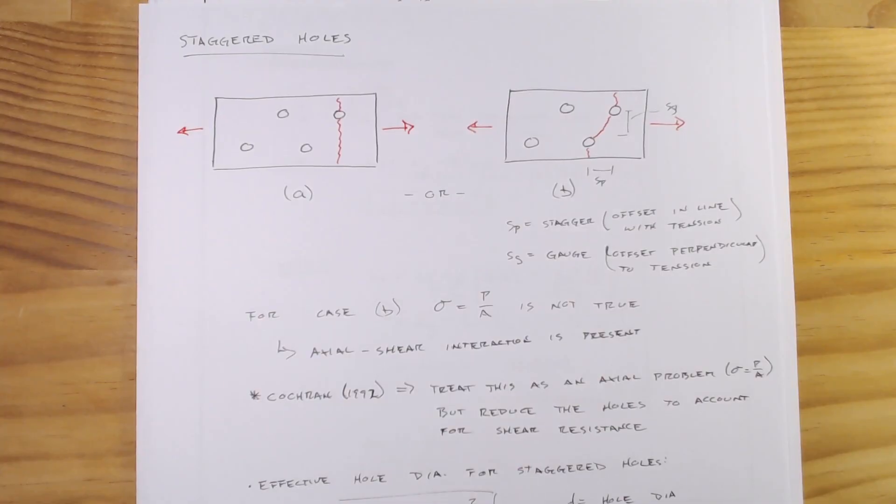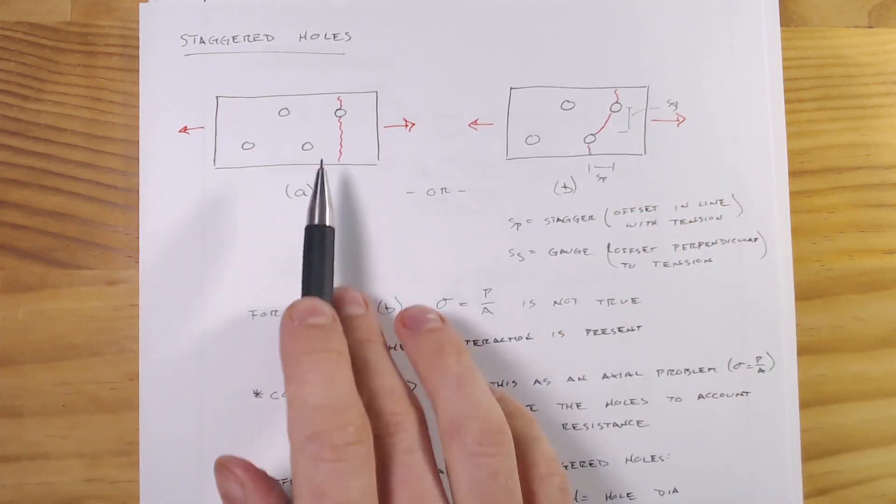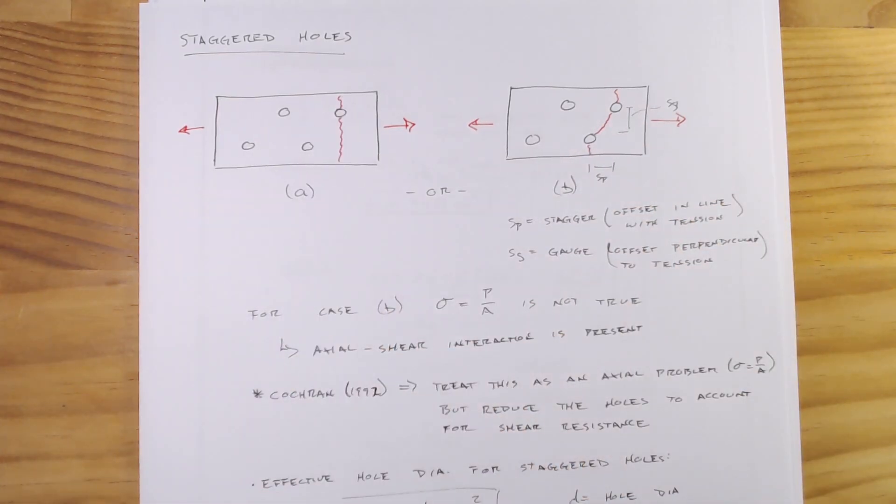So that's our overview of our staggered holes. And again, just, it's quite straightforward. We're just essentially modifying these staggers so that we can analyze it as a pure axial problem. So with that, thanks for watching.